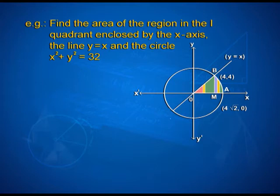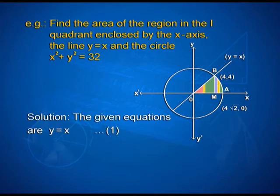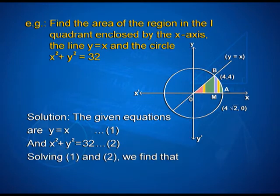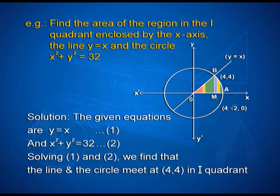Now let us look into one more example. Find the area of the region in the first quadrant enclosed by the x-axis, the line y = x, and the circle x² + y² = 32. In the figure, we have a circle with the x-axis, y-axis, and the line y = x, with vertex A at (4√2, 0) and B at (4, 4). Solving the two equations, the line and the circle meet at (4, 4) in the first quadrant.